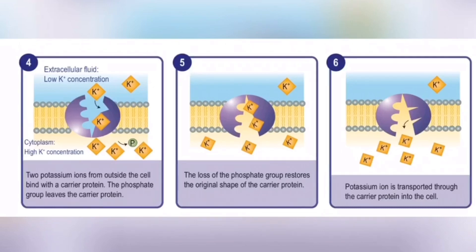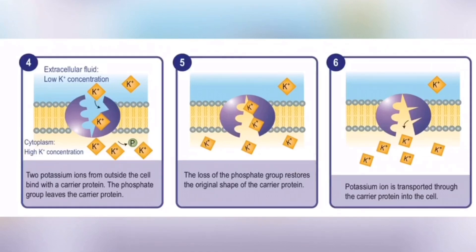For the process of accumulation, two potassium ions from outside the cell bind to the carrier protein. Then the phosphate group leaves the carrier protein. With no energy supply, this forces the protein to return to its original shape, enabling the potassium ions to be transported into the cell.